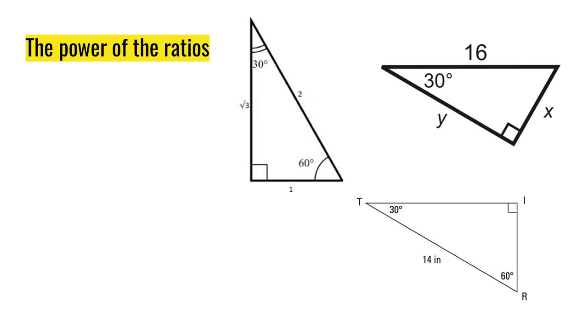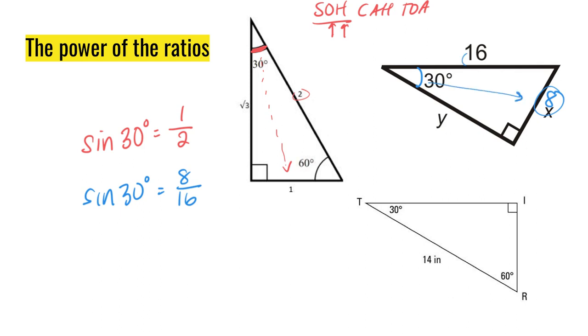Here's why the ratios matter. In this first triangle on the left, if I look at the 30-degree angle and I try to write the sine ratio of that 30 degrees, remember that sine is opposite over hypotenuse. I'm going to go to the opposite side is 1 over the hypotenuse is 2. When I look at this triangle on the right, the sine of 30 degrees is 8 over 16, opposite over hypotenuse.